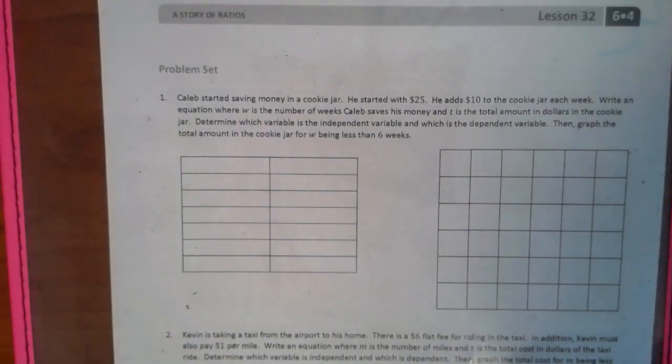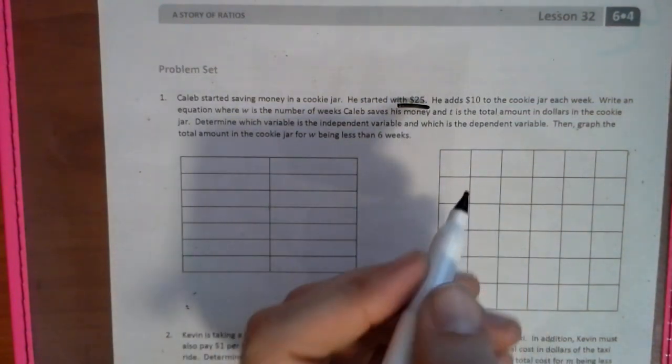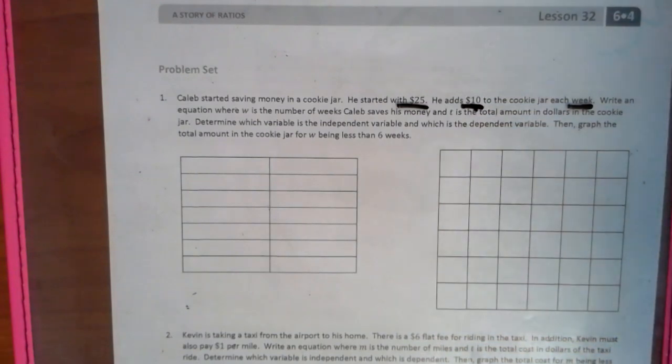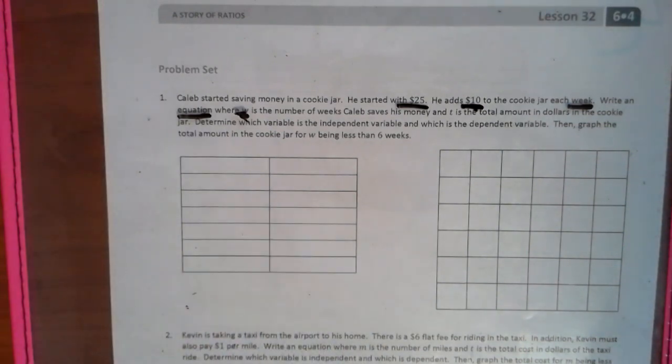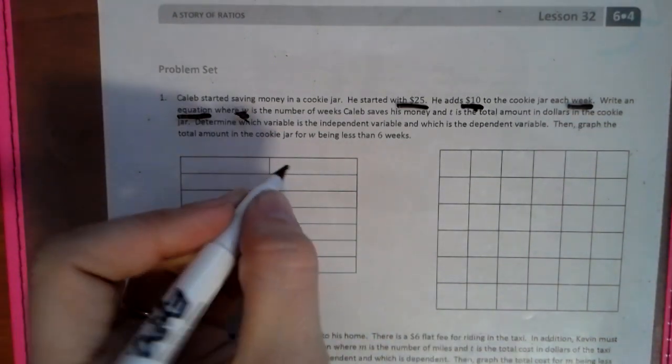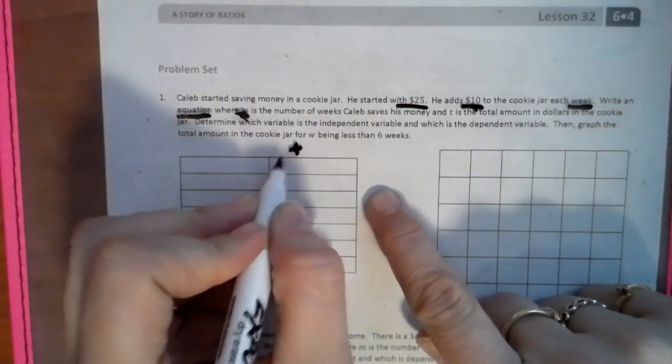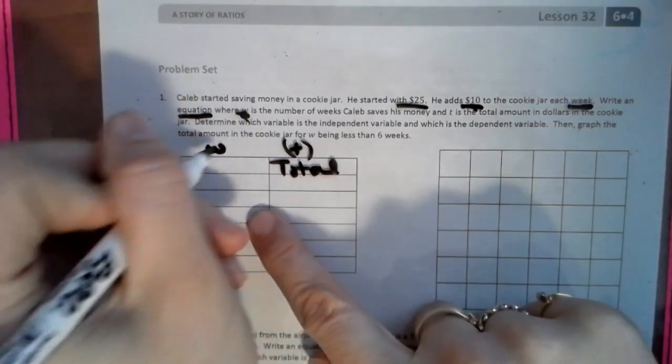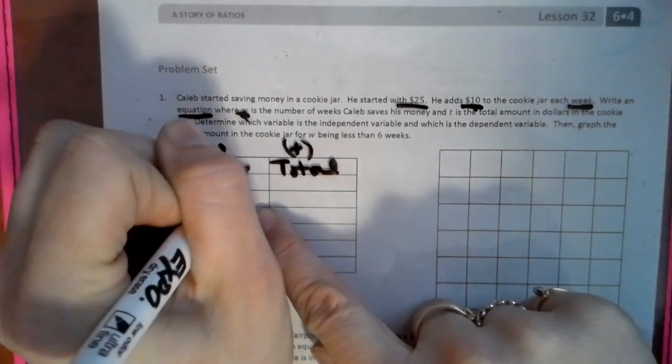So Caleb starts saving his money in a cookie jar. He starts with $25, so that's pretty important. He adds $10 each week. We're going to write an equation, so that's going to have an equal sign, where W is the number of weeks and T is the total amount of money that he earns.